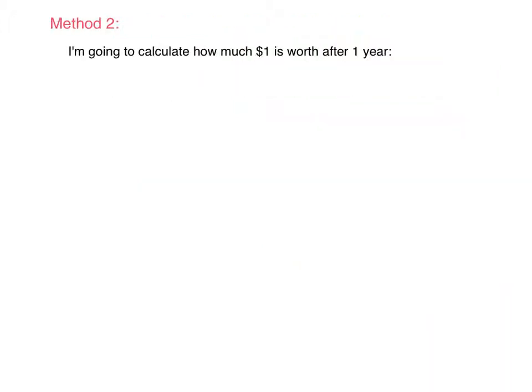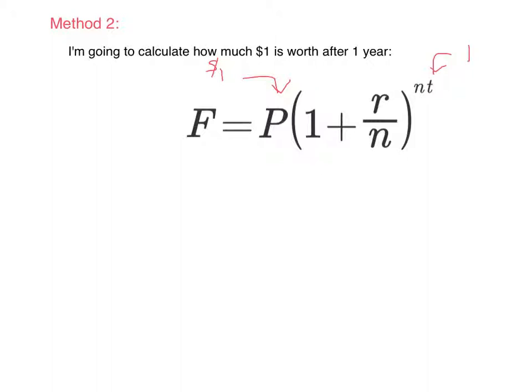The second method involves calculating how much $1 is worth after one year. It's going to make use of our usual financial formula for compound interest. Notice looking at $1 in one year, I'll put a $1 right here for P because we're just looking at $1, and I'll put a 1 in for t because we're just looking at one year. If I put $1 into both of those variables, the formula collapses down to a much more manageable formula. As you can see, this formula is much more manageable and would allow us to find the APY rather quickly.